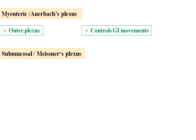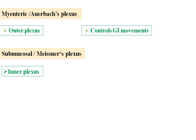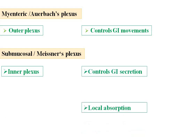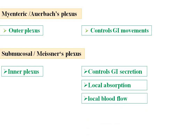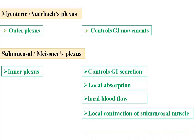The submucosal plexus is also called the Meissner plexus. It is the inner plexus. It controls gastrointestinal secretion, local absorption, and local blood flow. It also controls the local contraction of submucosal muscle.